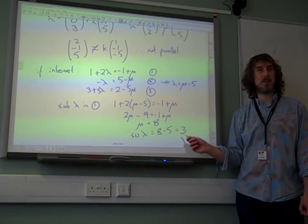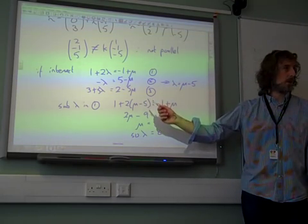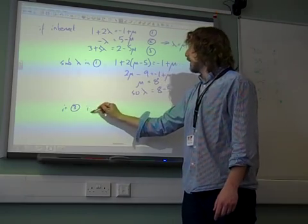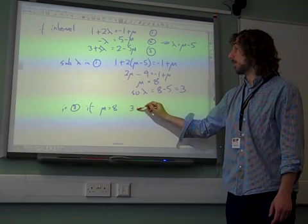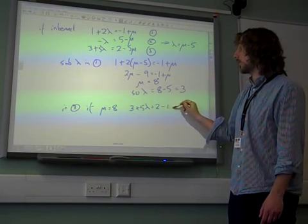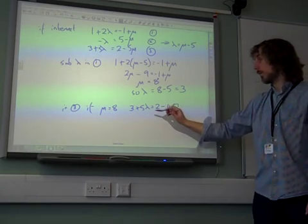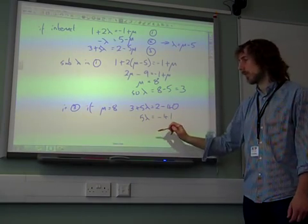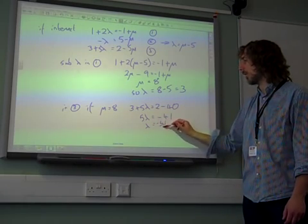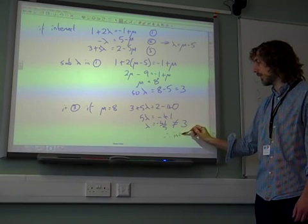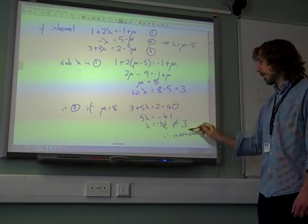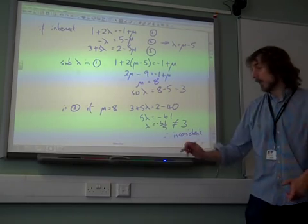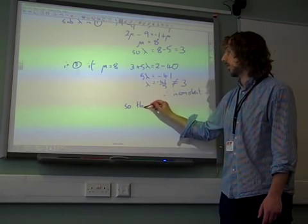We now need to check, are these values consistent with the third equation? If they are, then they intersect. If they're not, then they're skew. So, in equation 3, if mu equals 8, we would have 3 plus 5 lambda is 2 minus 40, 5 times our 8. So, 5 lambda would be, what is that, minus 38, take away another 3, it's minus 41. Lambda is minus 41 over 5, which is definitely not the same as 3, therefore inconsistent. The values of lambda and mu that we found for the first two equations don't fit the third equation, therefore the lines are skew.